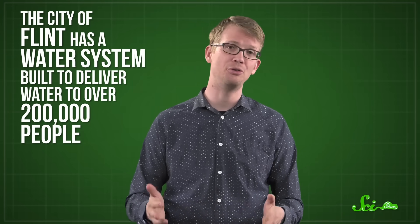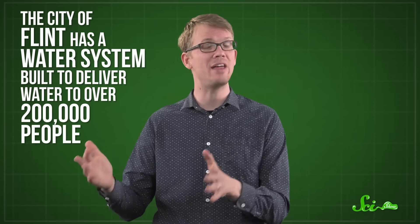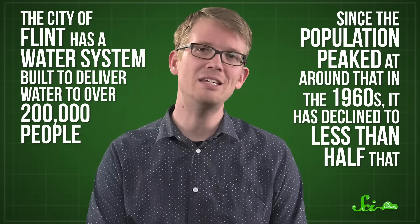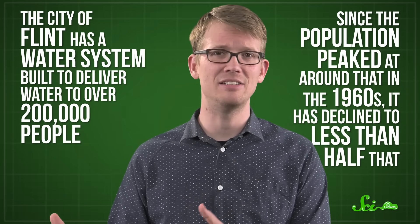All of this was made worse by the fact that the city of Flint has a water system built to deliver water to over 200,000 people. Since the population peaked at around that in the 1960s, it has declined to less than half that. So in some areas, the water moved through some pipes slowly or sat stagnant. As the Flint River water sat in the pipes and the corrosive chemistry did its thing, metal concentration rose, disinfectant concentration decreased, and bacterial growth increased.